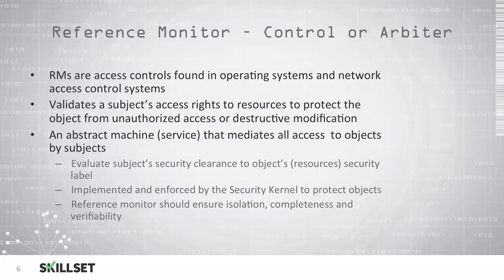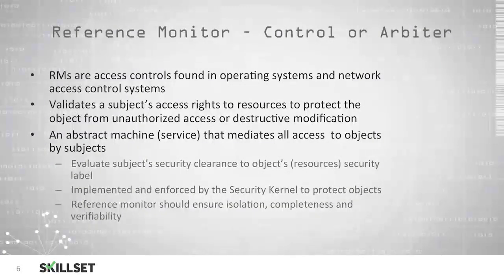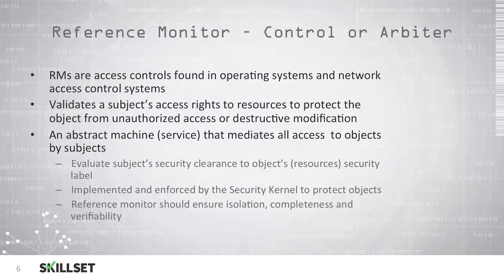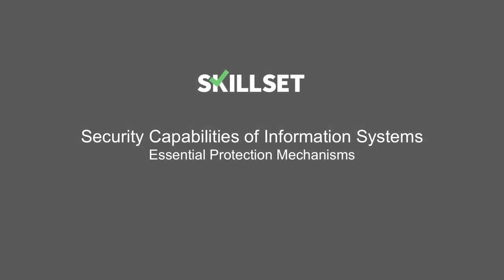An abstract machine is a service that mediates the access to any objects by subjects that attempt to access them. The service is designed to evaluate the subject's security clearance, then compare it to the object's security label to determine if the subject should have access. This is implemented and enforced by the security kernel in order to protect objects from unauthorized access. The reference monitor should ensure that objects are isolated from one another, and you should be able to test and verify the reference monitor to confirm it is working properly and preventing unauthorized access to your resources.